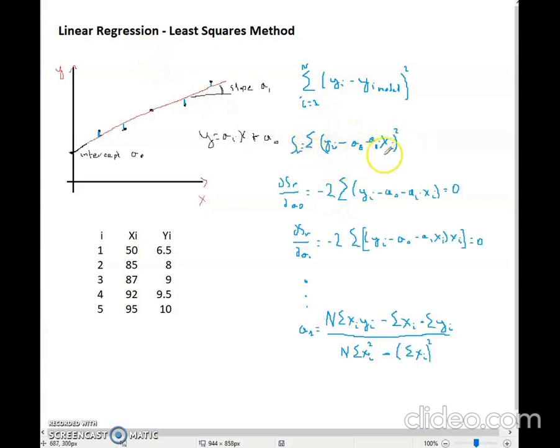So we can call this quantity, this summation of squares that we want to minimize, we can call it SR. First we take the derivative of SR over A0 and have this quantity be 0. Then we take the derivative of SR over A1 and now I want this to be 0.